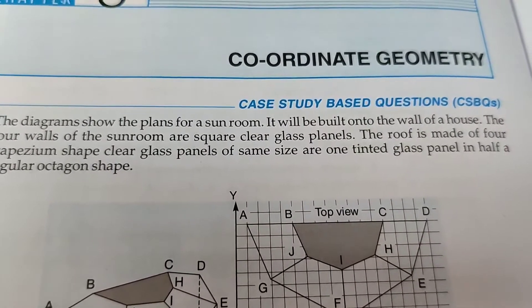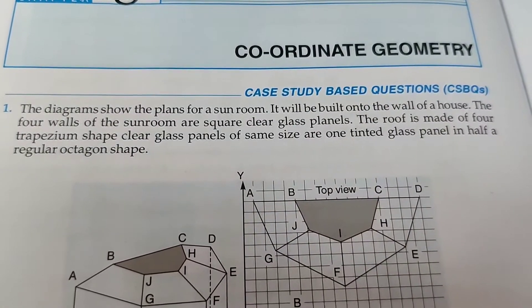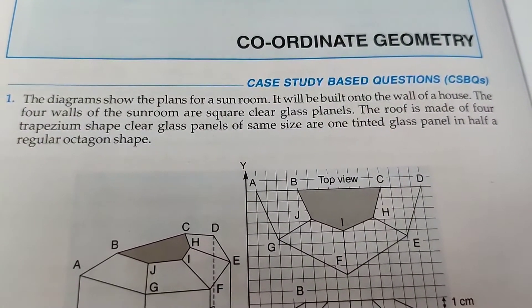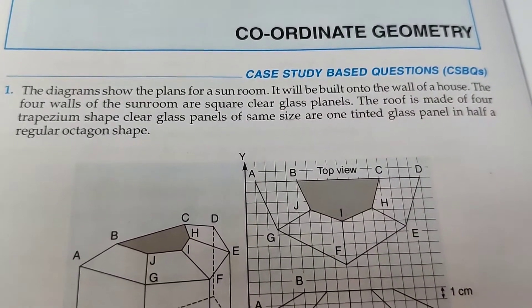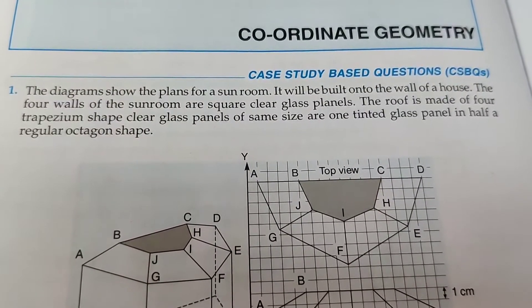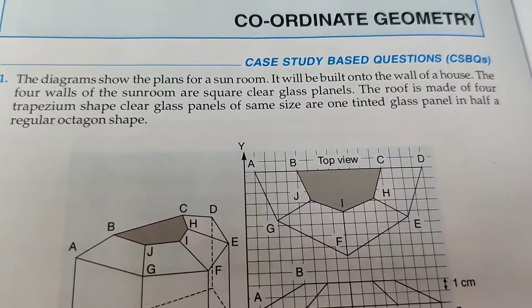This is a case study related to the chapter coordinate geometry. The diagram shows the plan for a sunroof that will be built onto the wall of a house. The four walls of the sunroof are square clear glass panels. The roof is made of four trapezium-shaped clear glass panels of the same size and one tinted glass panel in half a rectangular octagonal shape.